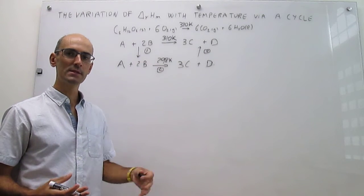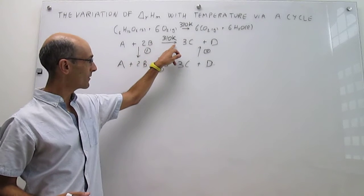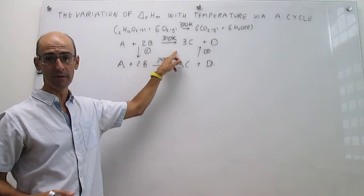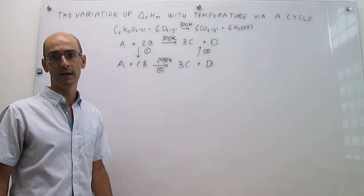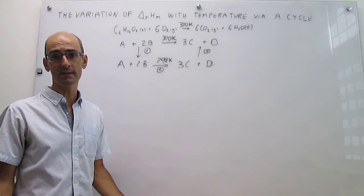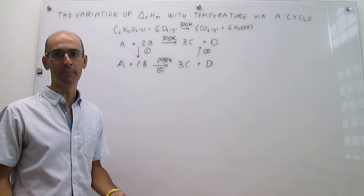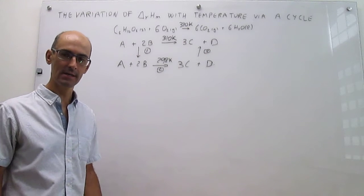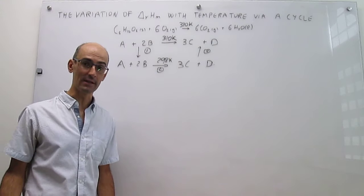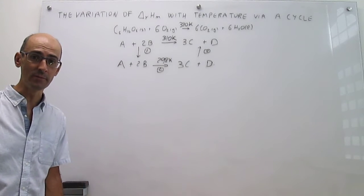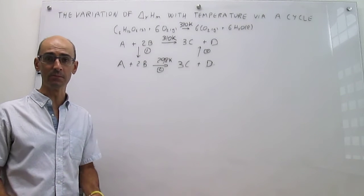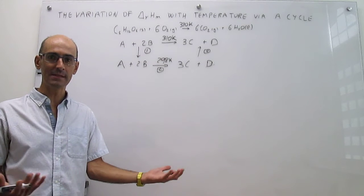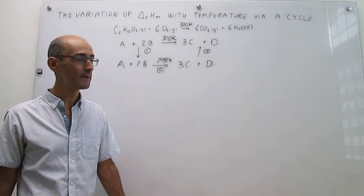Again, there are three steps. The enthalpy of this process will be the sum of the enthalpy of the three processes that provide the alternative route connecting reagents and products at 310 Kelvin. In the remainder of this video, we're simply going to write the enthalpies for those three steps.